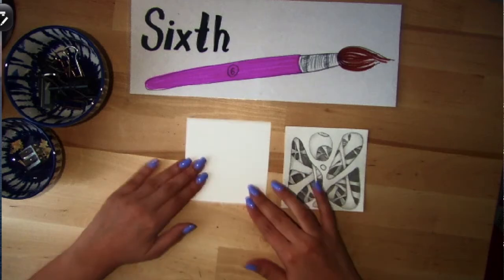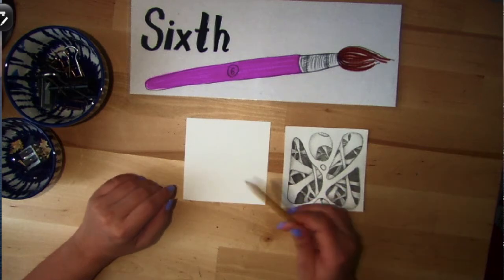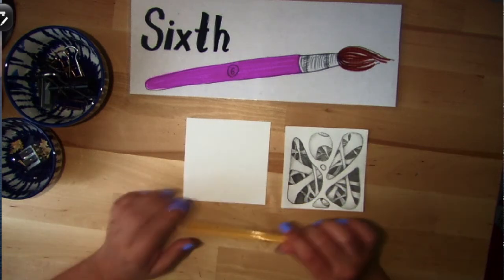The only thing we're going to need for this project is that tiny little square that I gave you and a pencil. You want to make sure that you have a nice sharp pencil because we're going to be using the edge of the pencil quite a bit instead of the tip.